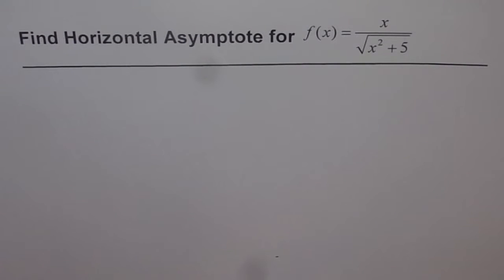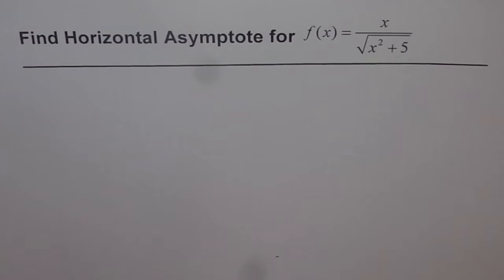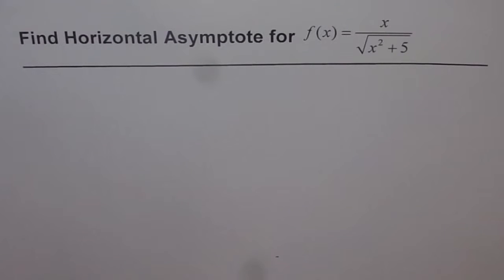Find the horizontal asymptote for f(x) = x over the square root of x² + 5. This is a very interesting question and most of the time I have seen students getting it wrong in the test paper. Look into this very carefully — the basic concept I'm going to use here is: what is the square root of x²? If you can answer that question, you will get the right answer for this particular problem.